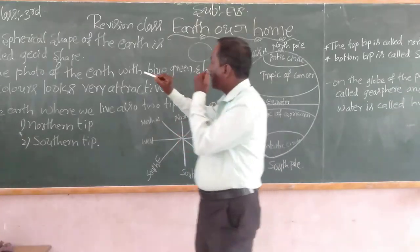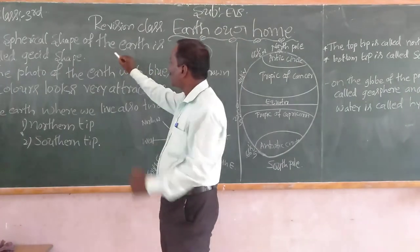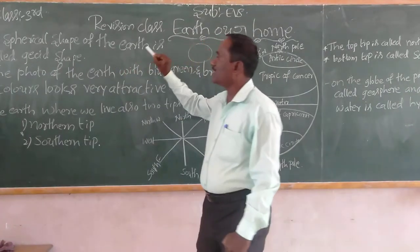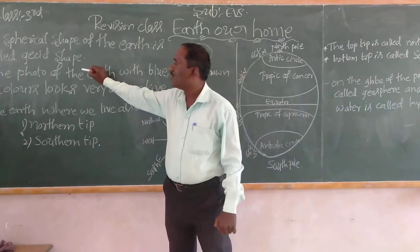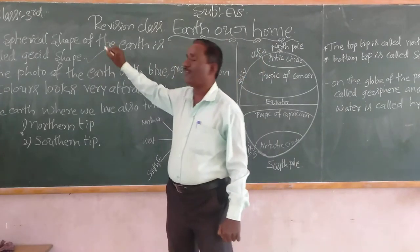The spherical shape of the earth is called Jeel shape.